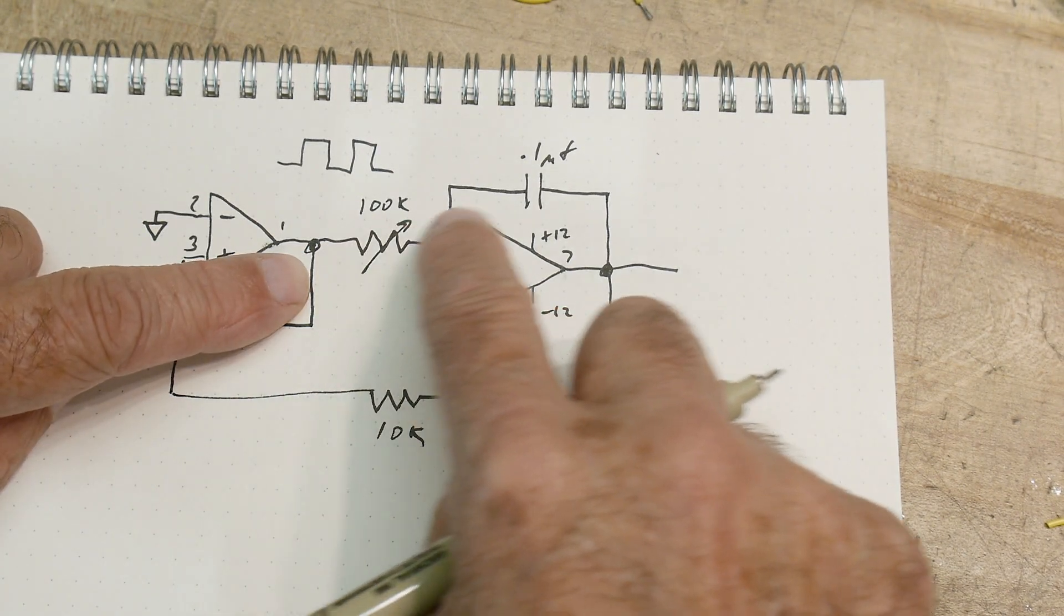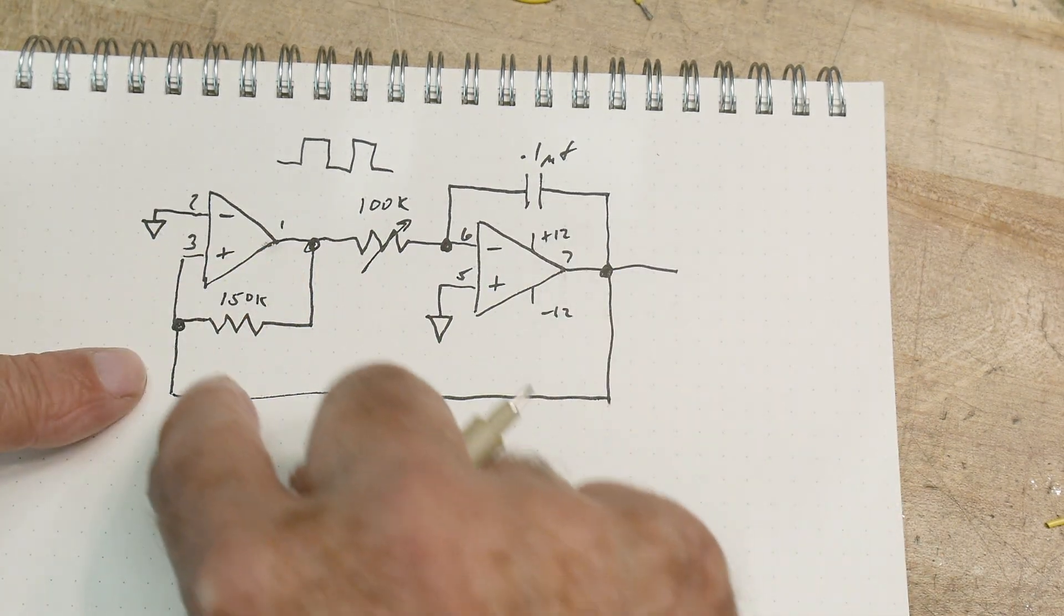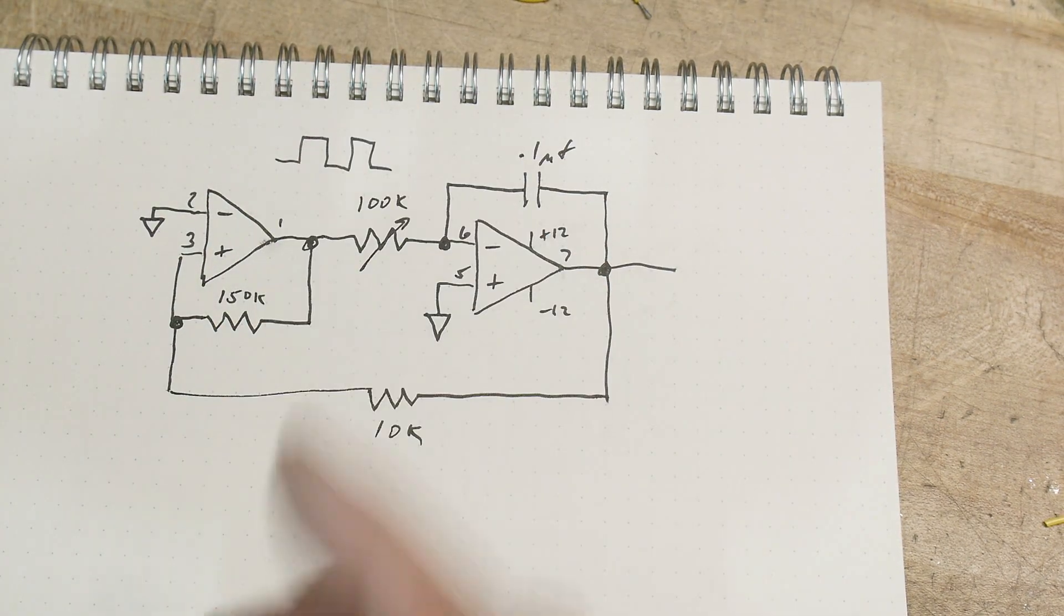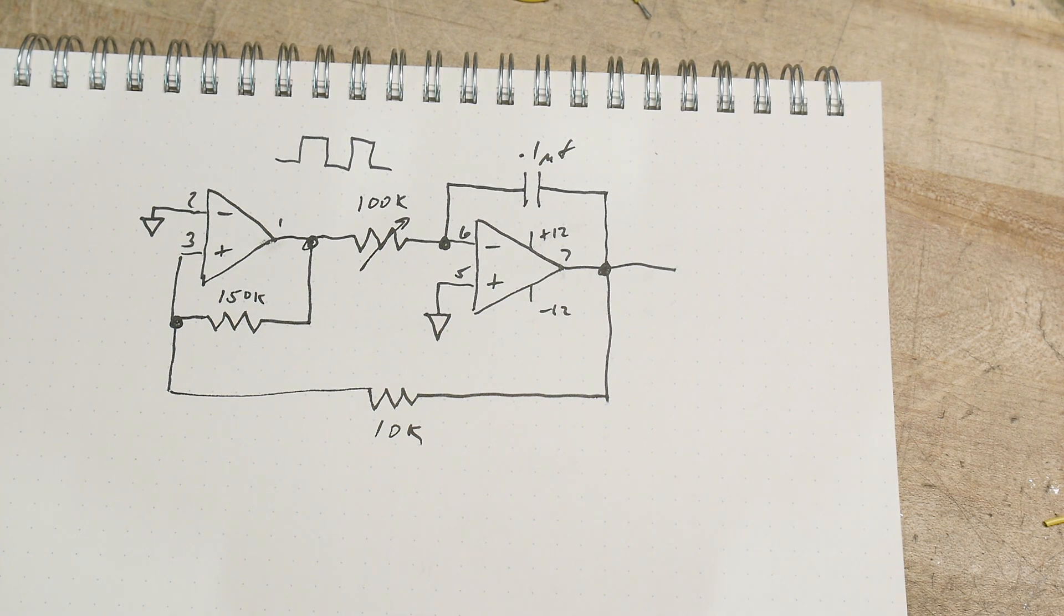What we should see at this point here is a square wave, because every time it flops then the integrator will go, and then it'll come back around and whoop, and it'll flop the other way.